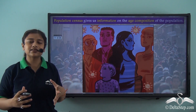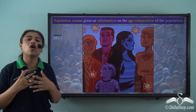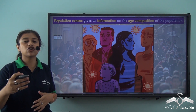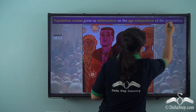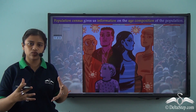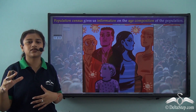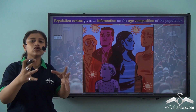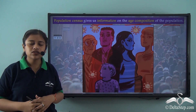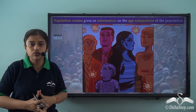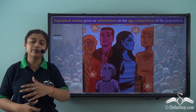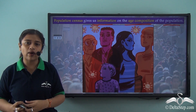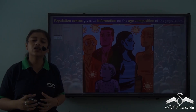Population census does not only talk about the total population of an area but also helps us understand the age composition or age breakup of a particular region. For example, if the government wants to set up schools or improve educational infrastructure, it cannot go door to door asking the number of children going to school — especially for a country like India with such a huge population. Population census helps the government and concerned authorities extract the required information and work accordingly.